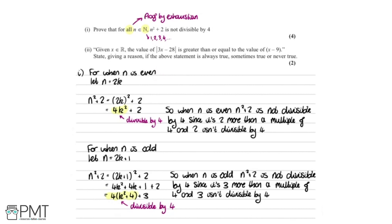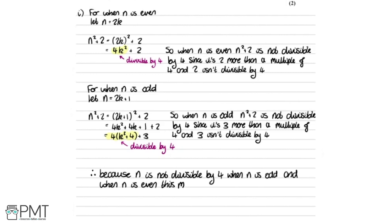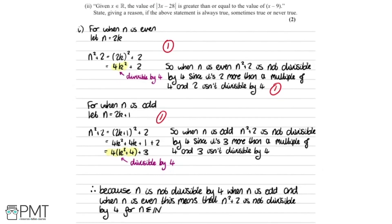We have now proved the result, because we've looked at both even and odd numbers — covering all natural numbers. We can conclude: since n² + 2 is not divisible by 4 when n is odd, and not divisible by 4 when n is even, n² + 2 is not divisible by 4 for any n contained within the natural numbers. For the four marks: one mark for testing n even, one for the explanation, one for testing n odd, and one for the conclusion.